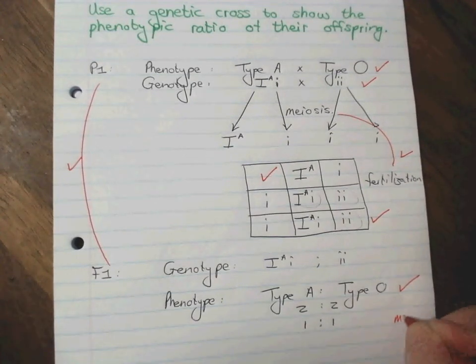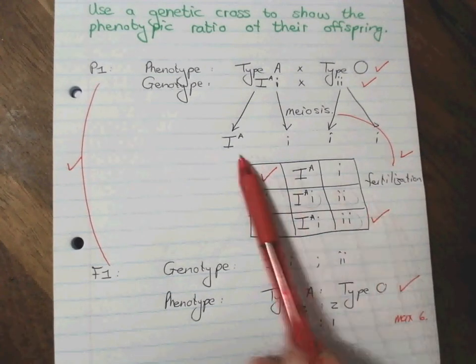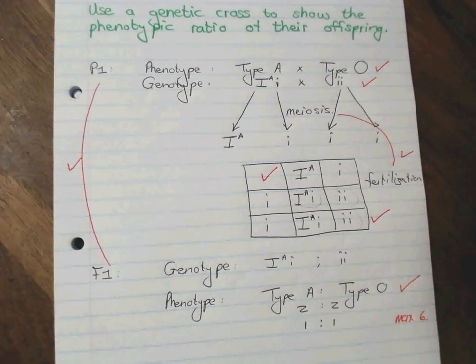Now this question is usually a maximum of six marks, but you'll see here there's one, two, three, four, five, six, seven places where you can get marks.